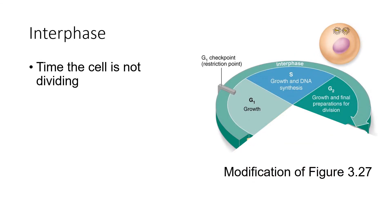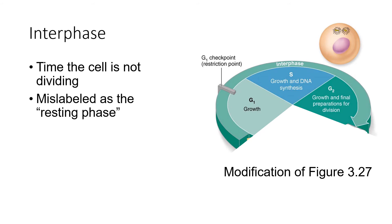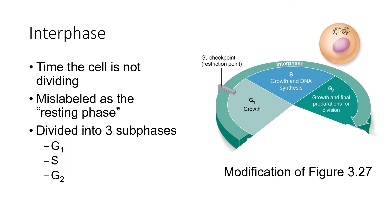Interphase is the portion of the cell cycle where the cell is not dividing. It is often referred to as the resting phase — certainly when I was in school, I was taught interphase is the resting phase. However, this is really a misnomer. The only thing the cell is resting from is cell division itself. The cell is growing, carrying out normal metabolism, so it's not really resting. Interphase itself is divided into three sub-phases: G1, followed by S, and then finally G2.